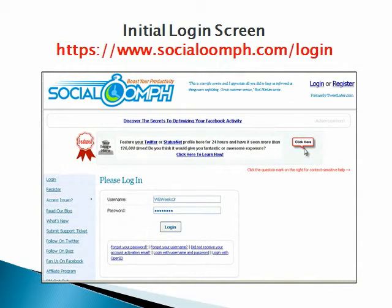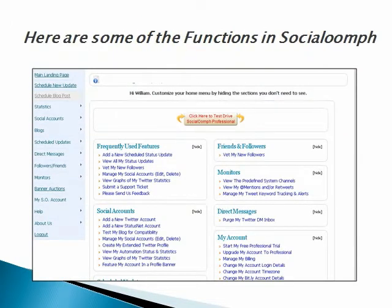Your initial login screen — that's the URL for the login underneath there — and in this case I've already registered so I'm ready to log in. You might need to register and set up your account first. Once logged in, you'll see on the left hand side there are a number of toolbars, and in the middle you're going to see a number of functions: features, accounts, friends, followers, and underneath those are sub-functions listed under each specific function.